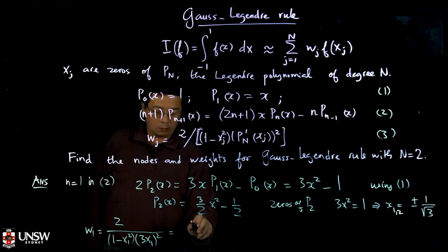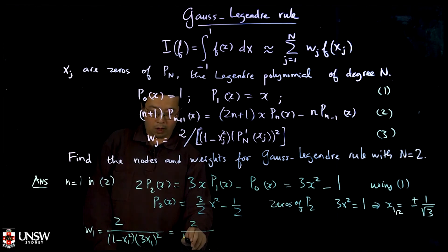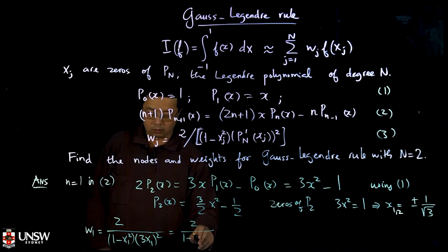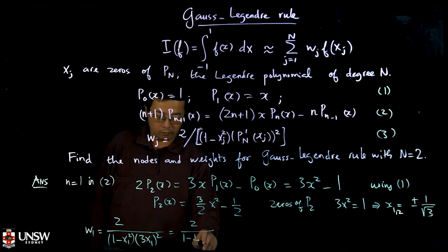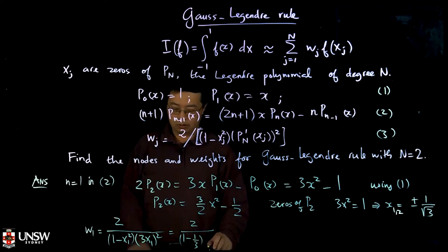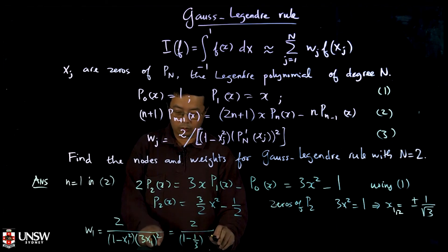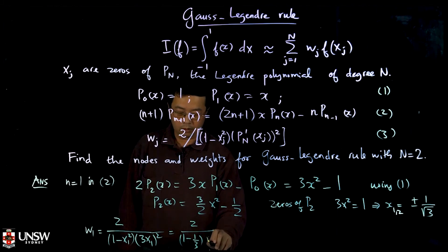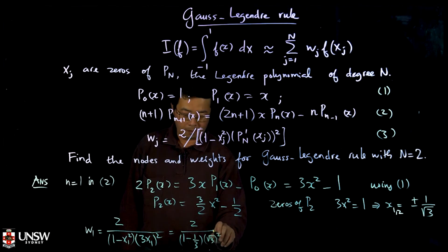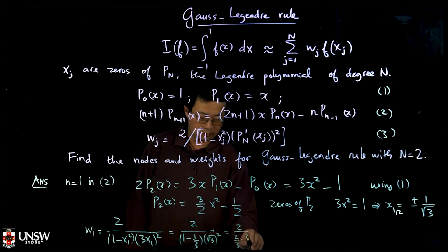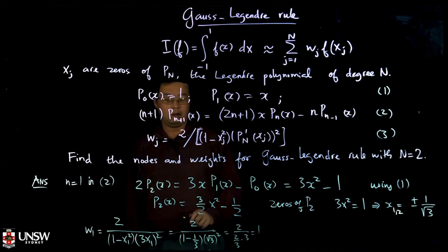So then I will put in, so 1 minus, so x is 1 over root 3, so when you square it will become 1 over 3, and this one will be 3 square, so will be 3, so 3 times 1 over root 3, so become root 3 square. So will be 2 over 2 over 3 times 3, so we get 1.